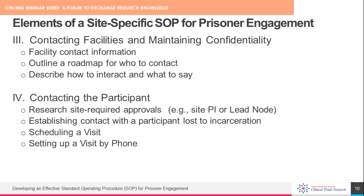Information about how research staff should contact a participant is another important element to consider. The lead team and local study research team will need to determine if any internal approvals are required before research staff initiate contact with the participant. If so, this should be included with specification about the acceptable approval method and storage — for example, whether an email is acceptable or if a progress note is the preferred method to document the approval.